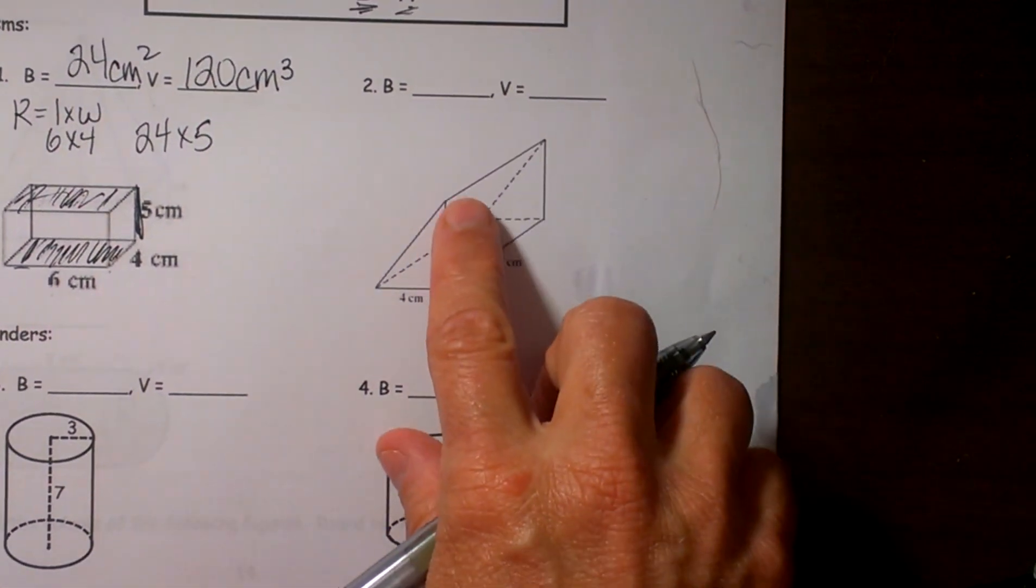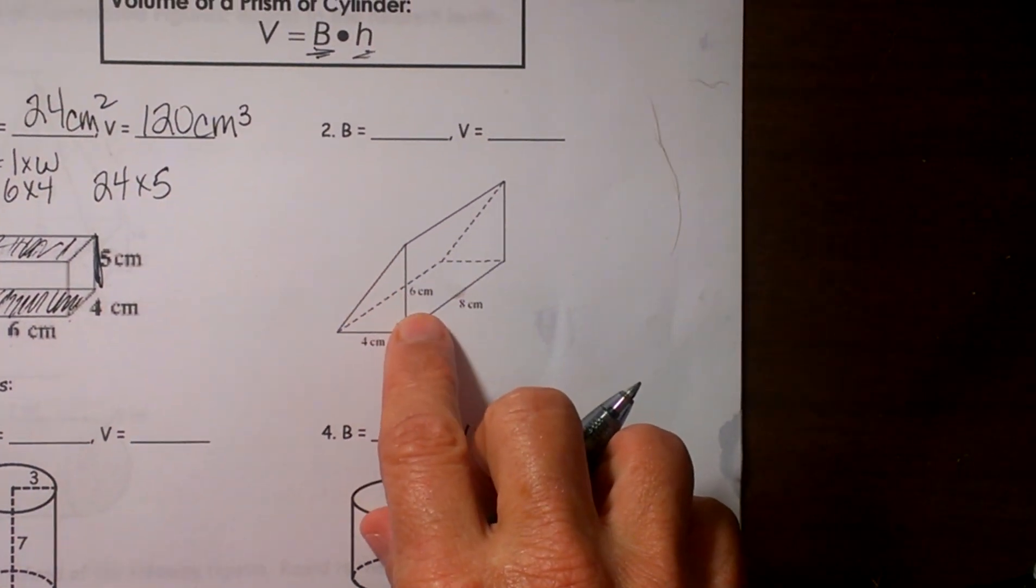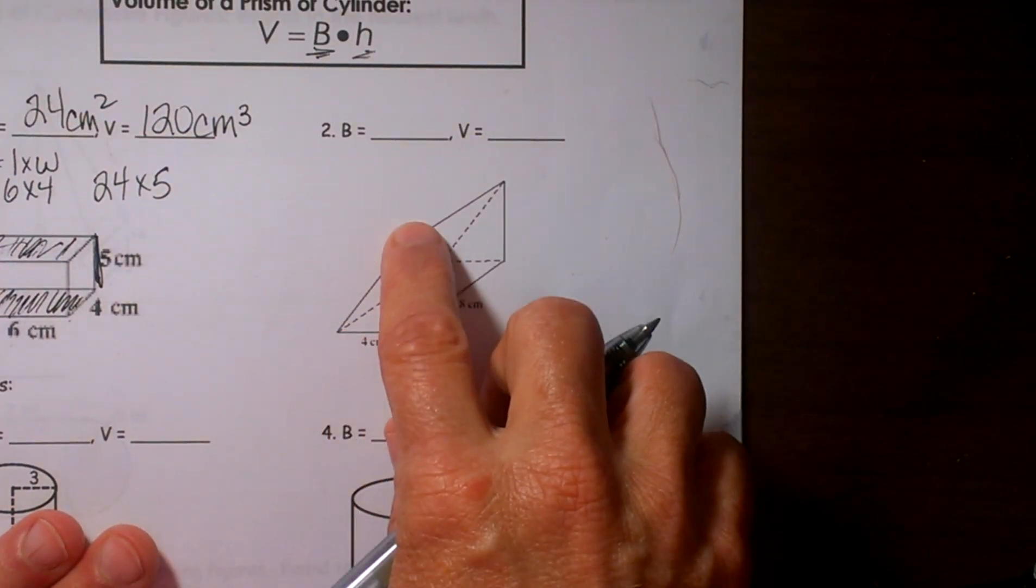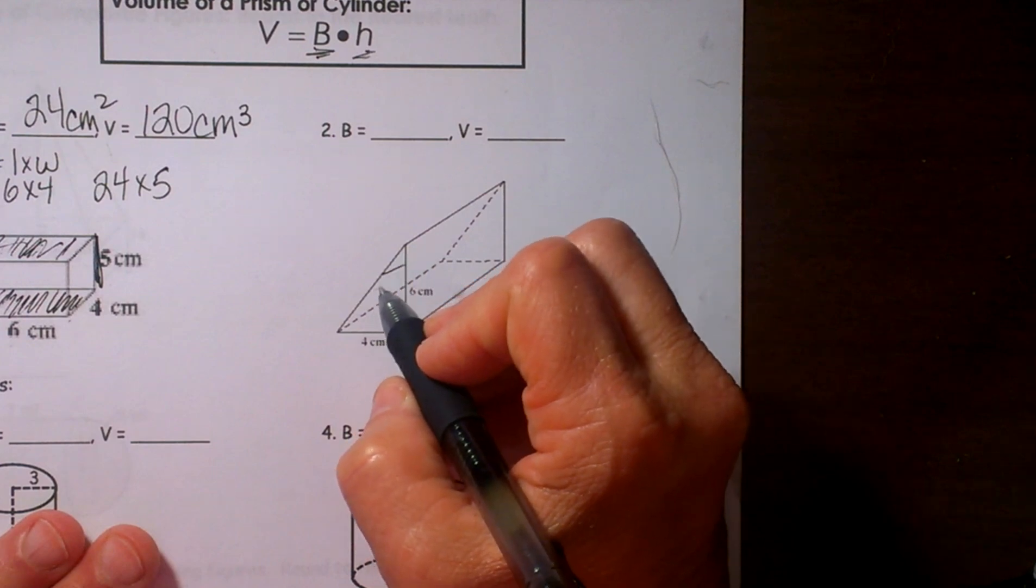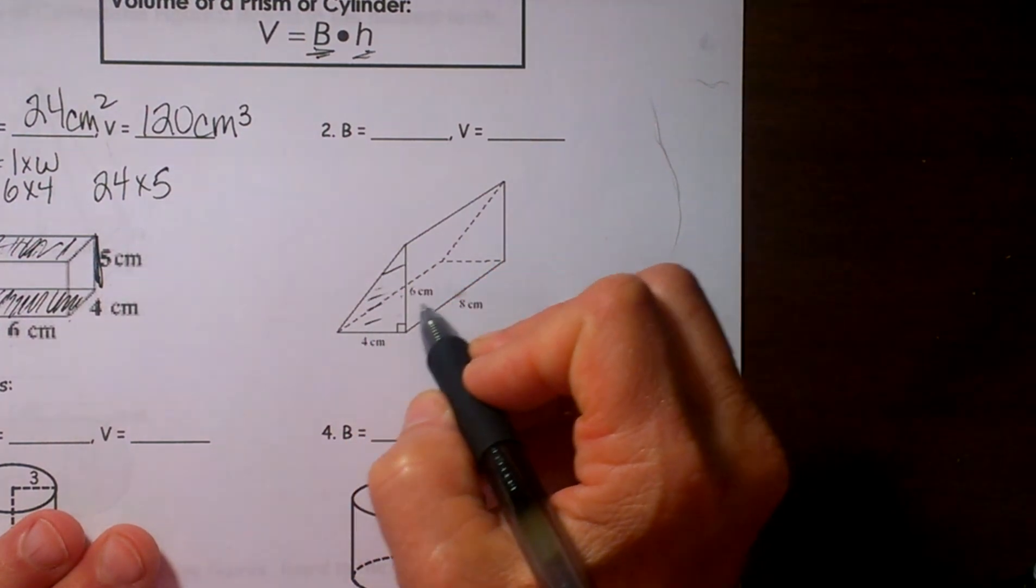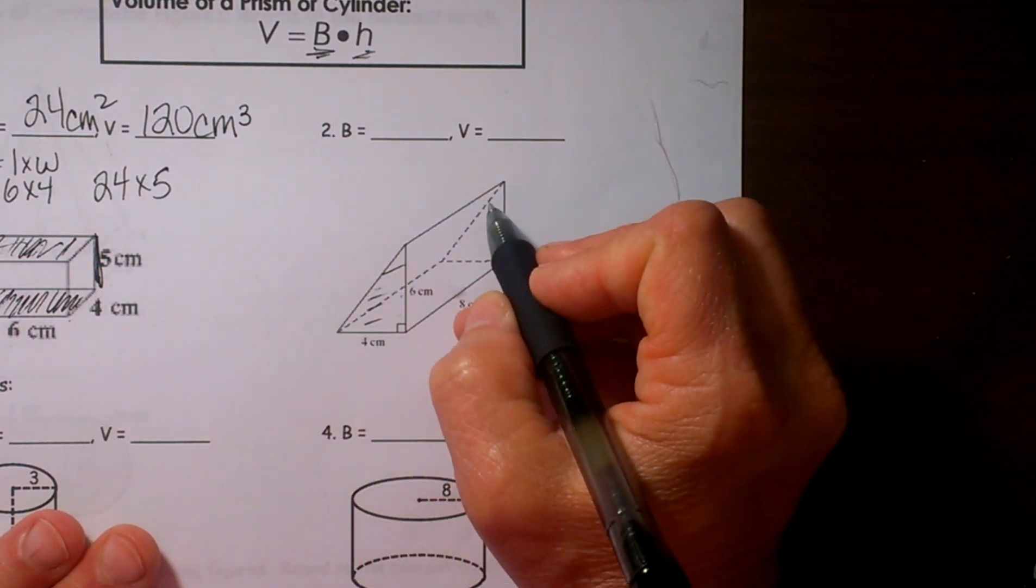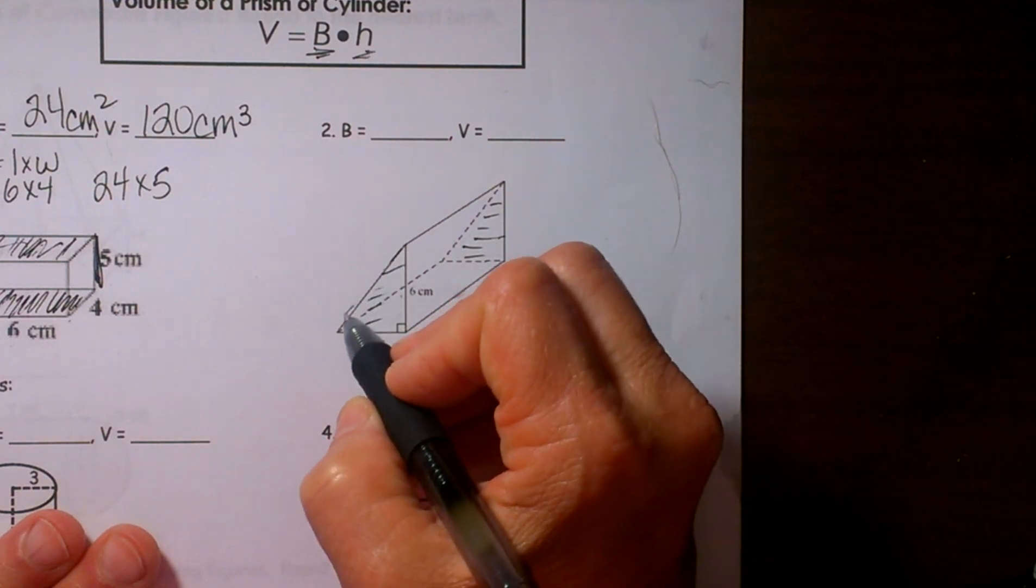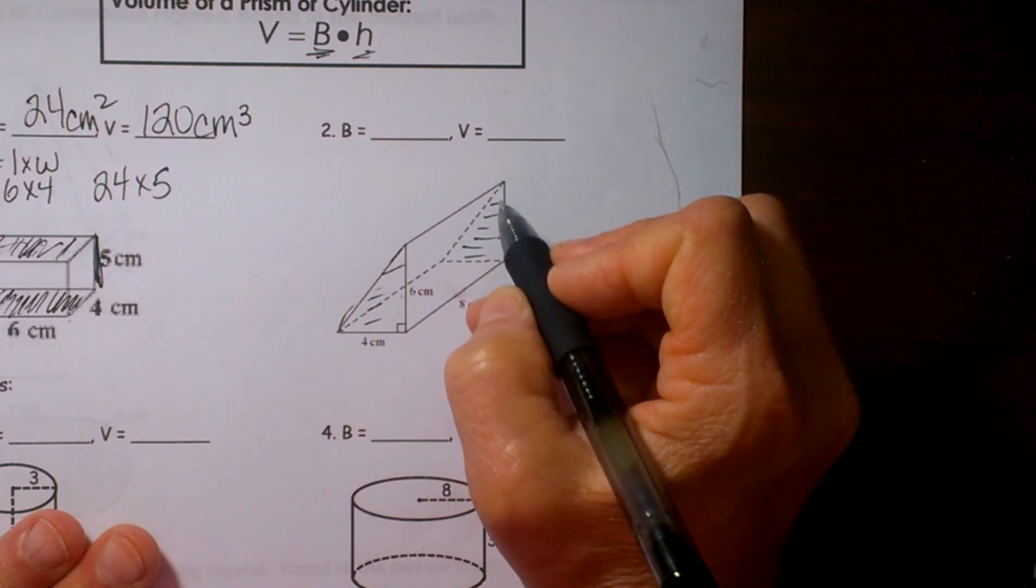Now let's look at one that is a little bit harder because the base is a different shape. The base of this one is our triangle. Sometimes you would think it would be this rectangle on the bottom but it does not have a side that is parallel to it. So always look for your bases that are parallel to each other.